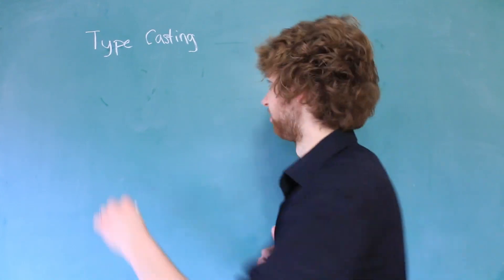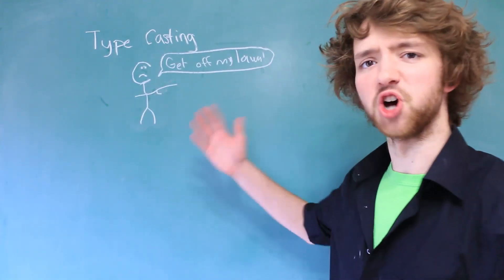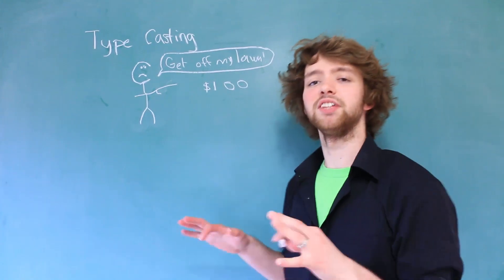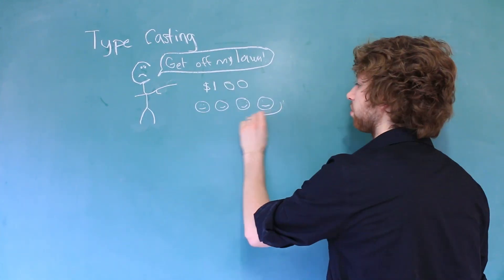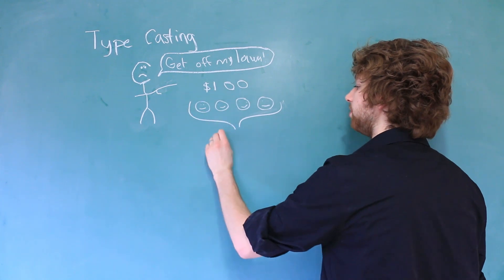You owe this man a dollar so you go up to him and you're like hey, man I finally got your money. Here you go. Here's four quarters and four quarters are going to add up to be one dollar.